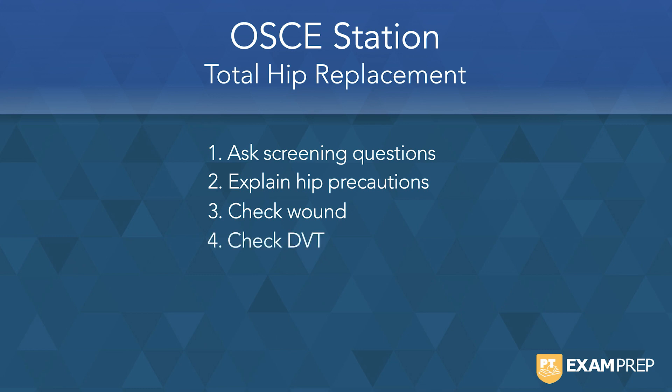Next, you're going to do your DVT check. Remember the five steps for the PT exam prep DVT check: ask if they're having any pain, expose the area, look at both legs for redness or swelling, palpate for heat, and then do the Homan's test — passively dorsiflexing the ankle and asking if they have pain in their calf. There is some debate about the validity of the Homan's test, but for the exam we still want you to do it along with the four other steps, creating your five-step DVT check.